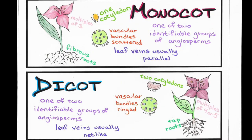If you look back at the flashcards that I posted at the beginning of the unit, you will find cards for monocot and dicot that have images and definitions that will help you classify angiosperms as monocots and dicots.